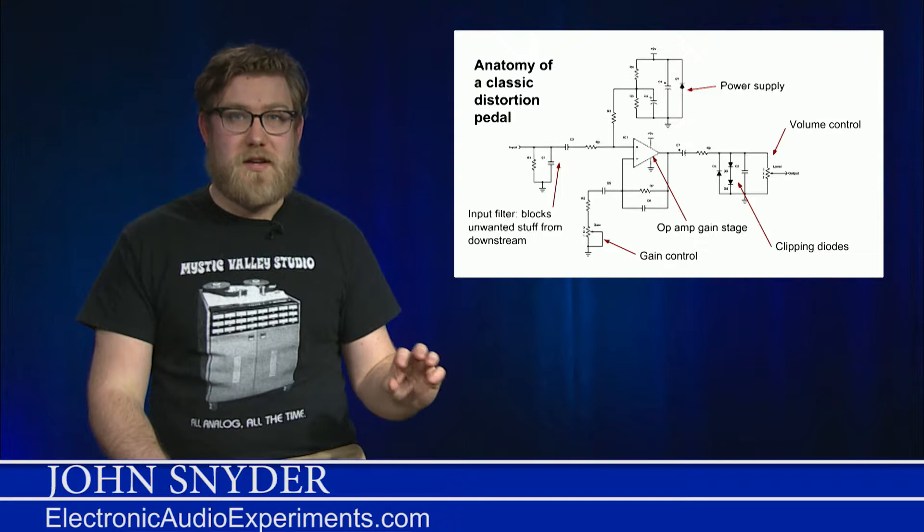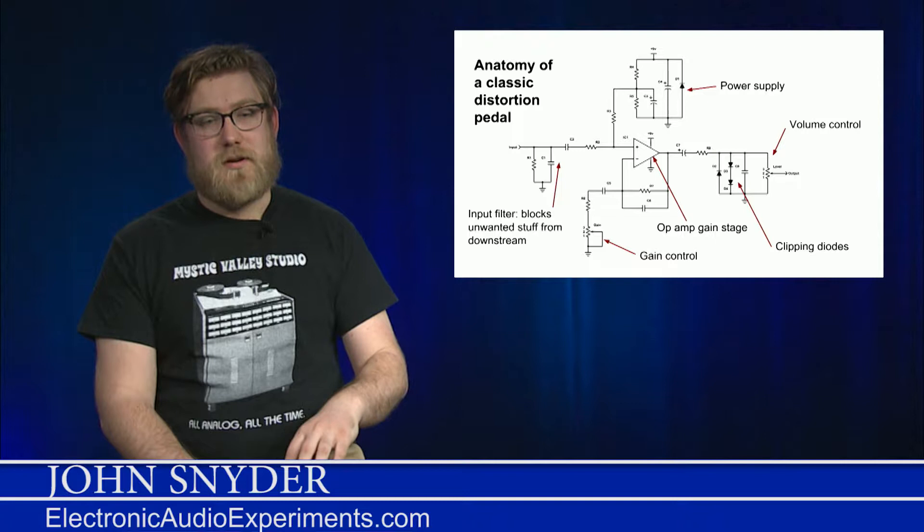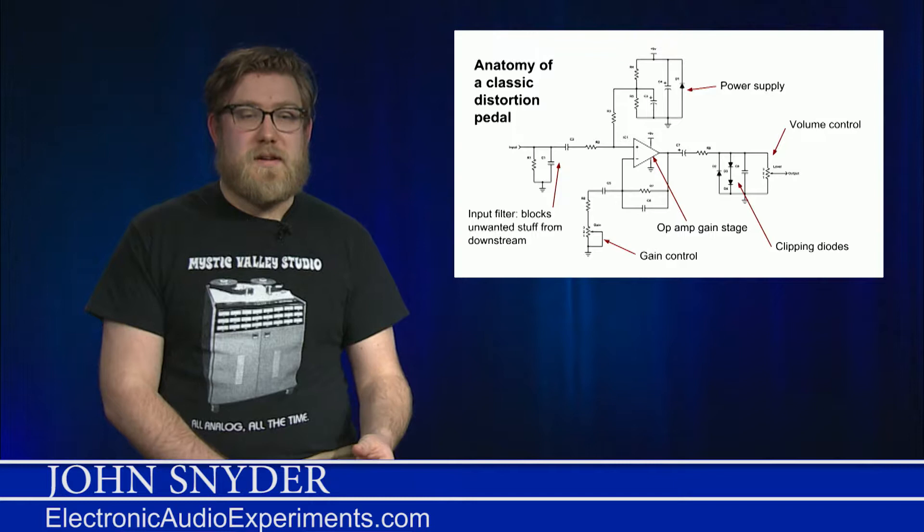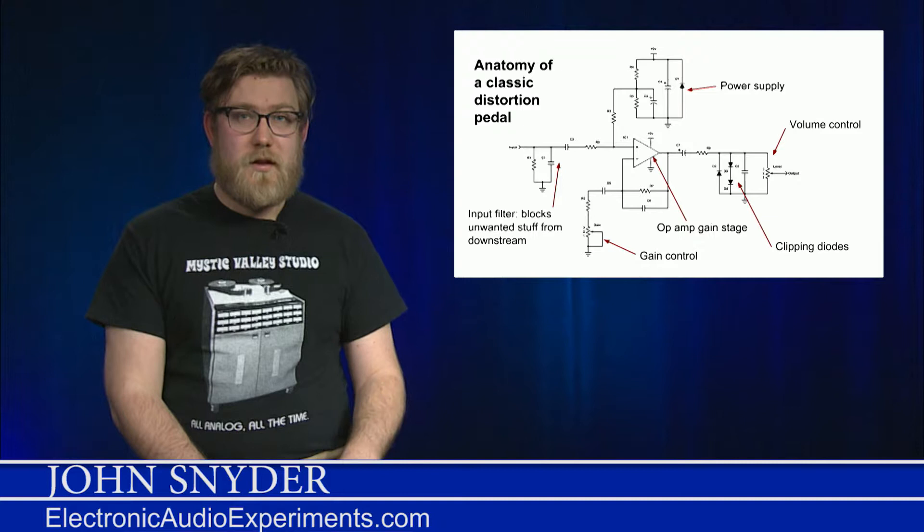Up at the top, we have the power supply. The power supply's job is simple. Take what's coming in, make sure there's no noise and give the op amp the voltages that it wants to work correctly. Now finally, at the end, we've got something that we haven't seen before. These are what we call clipping diodes. I'm going to talk about those a little more in the next slide, but that's what gives the distortion its rough edgy character that we know so well for electric guitar. And then at the very output, you have a volume control, which is a voltage divider like we talked about before.